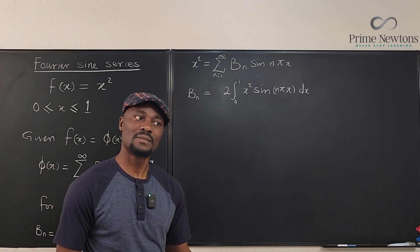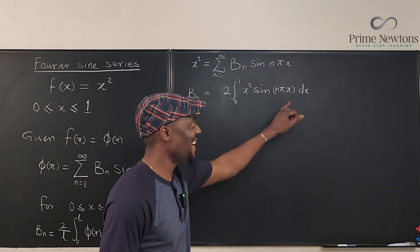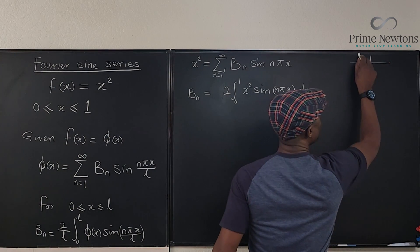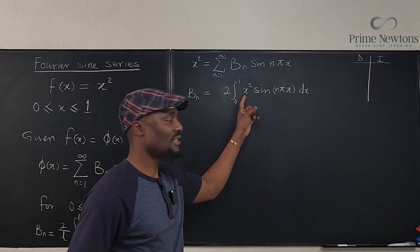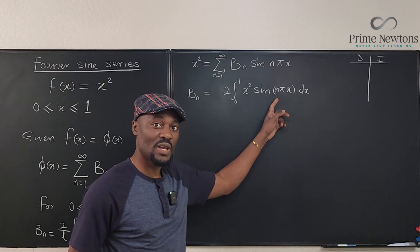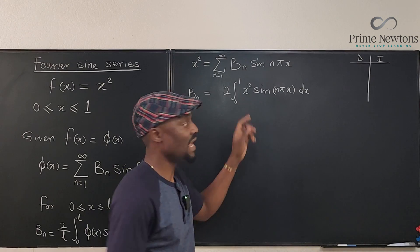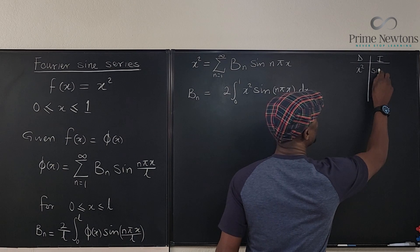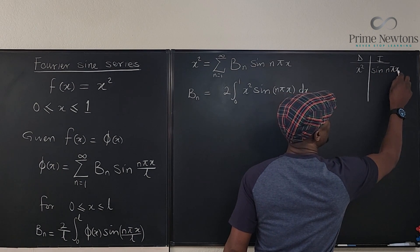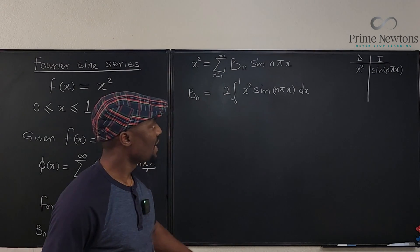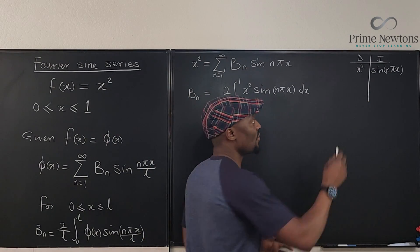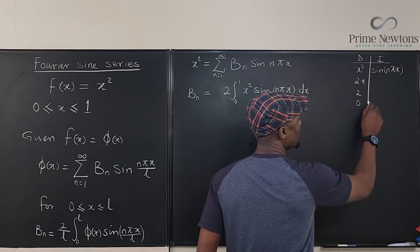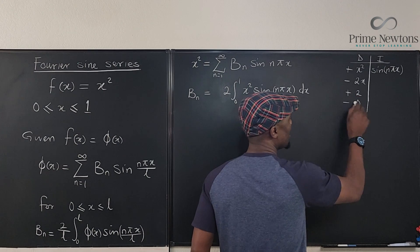Let's do the DI table. We're going to differentiate and integrate. Because this is a polynomial and a trig function, I'm going to use the LIATE rule. I'm going to have x squared here and sine n pi x here. I'm going to differentiate x squared until I get zero: 2x, then 2, then zero. And I have plus minus plus minus.